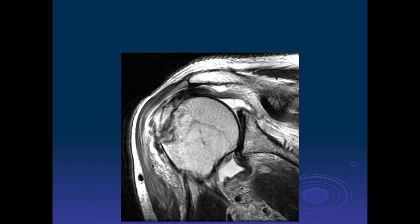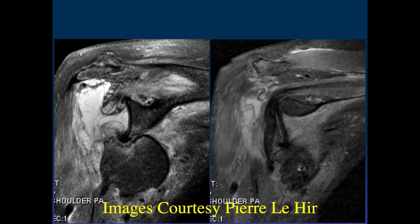We ended yesterday on this inferior dislocation with a very superior Hill-Sachs lesion, a HAGL lesion with a humeral avulsion of the inferior glenohumeral ligament. Michael, why don't you take this subtle case?